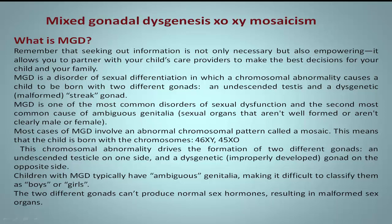This chromosomal abnormality drives the formation of two different gonads: an undescended testicle on one side, and a dysgenetic — improperly developed — gonad on the opposite side.